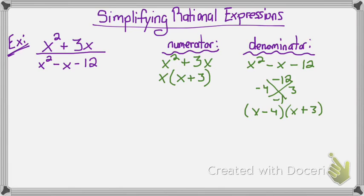Now that I have my numerator and my denominator already factored, I'll put them back together with the factored out expressions. I have x times x plus 3 in the numerator and x minus 4 times x plus 3 in the denominator.